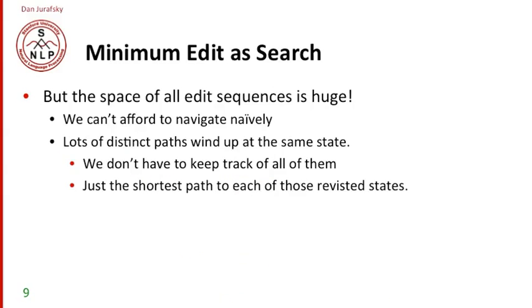So this space of all possible sequences is enormous. So we can't afford to navigate naively in this sequence. And the intuition of solving this problem of lots of possible sequences is that lots of these paths wind up at the same state. So we don't have to keep track of every way of transforming one string into another if the second pieces of the second string are identical. All we have to keep is the shortest path to every revisited state.